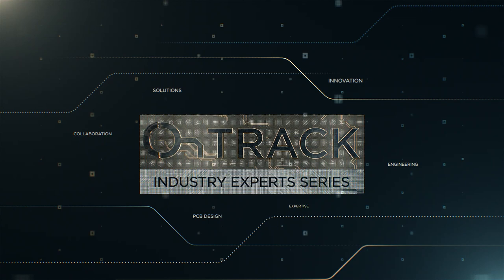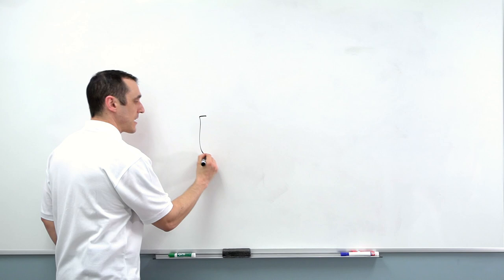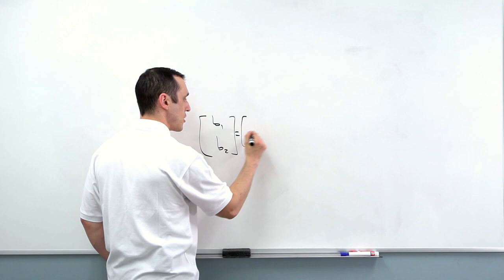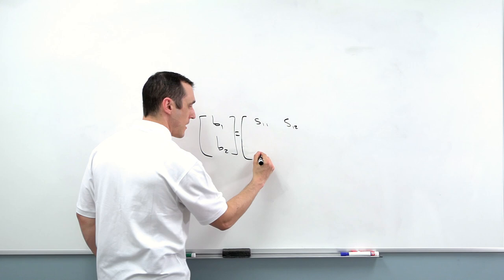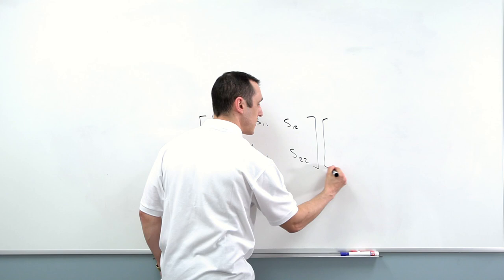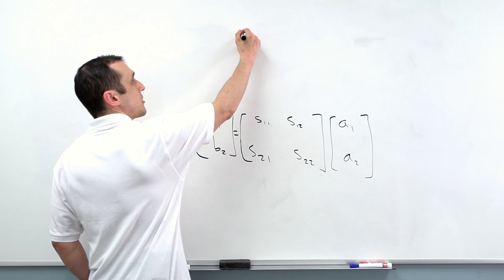In the previous video we looked at the definition of S-Parameters in terms of powers at our two ports. So we have our matrix here: S11, S12, S21, and S22, and this is multiplied onto our input powers at each of our ports. So we basically have a network that looks like this.